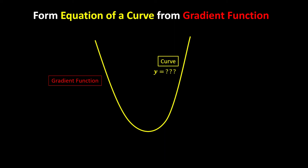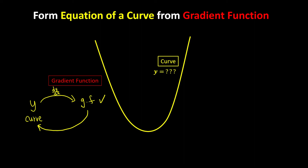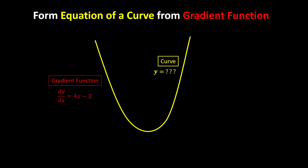This is because when we have y as the equation of a curve, if we do the differentiation — which is dy over dx — we can get our gradient functions. But now they give us the gradient functions. How do we reverse it to find back the equation of the curve? We can just do the antiderivative, which is integration. So we just need to integrate the gradient functions to find back the equation of the curve.